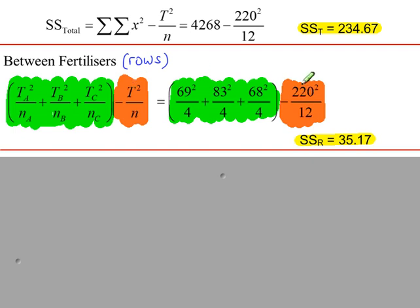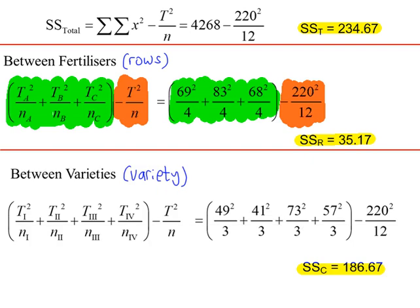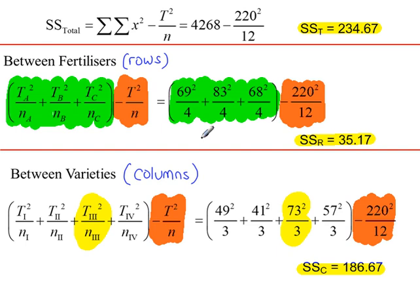The T here is 220. N, the total number of data values, is 12. So we get this value, sum of squares for the rows. And then doing something similar for the columns. We've got variety 1, 2, 3, and 4. And we're doing T squared over N for each one. For instance, for variety 3, the total value was 73, so it's 73 squared. And there was three values in that sample, 73 squared over 3. And then this part, minus T squared over N. Again, minus 220 squared over 12. So between varieties is data in columns.